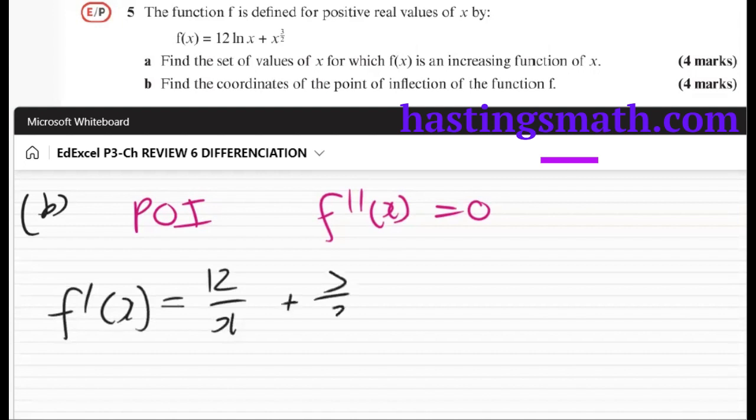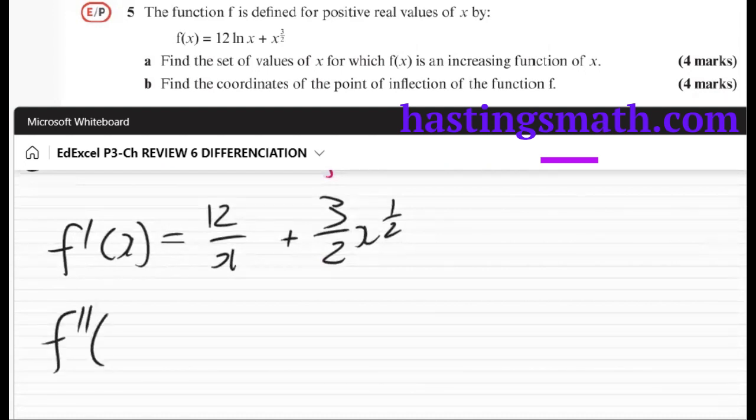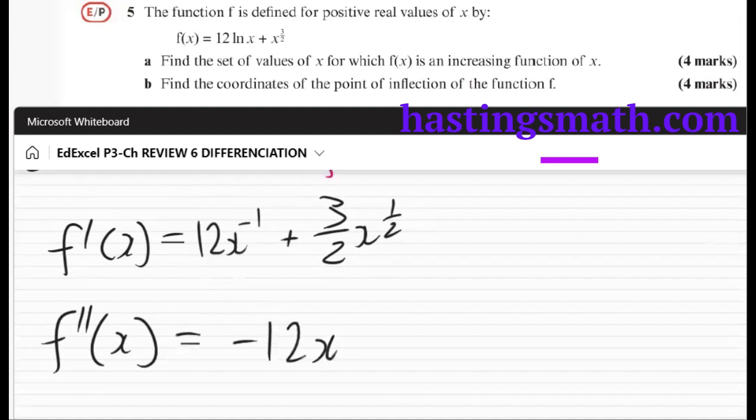So let's grab our first derivative from the previous question. So it was 12 over x plus 3/2 x to the power of a half. I'll leave it like this. So we want to derive that again. So f''(x), I'm going to change this 12 over x to x to the power of minus one just to make it easier. So minus one times 12 is negative 12, x minus one minus one is minus two, plus a half times 3/2 is 3/4, and a half minus one is minus a half.